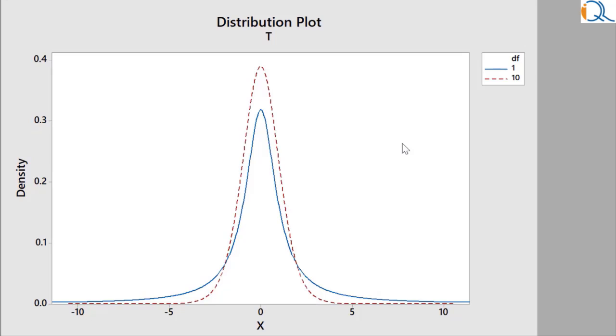If I click on ok, now I can see two distributions. The blue one is with 1 degree of freedom and the other one that is dotted one is with 10 degrees of freedom. Now you can clearly see that the tail area under the distribution with 1 degree of freedom is much more in tails compared to the middle.